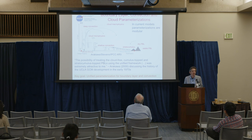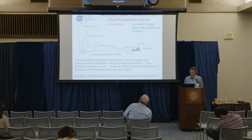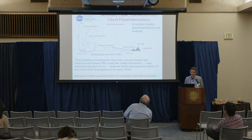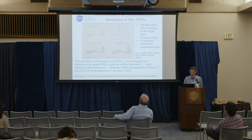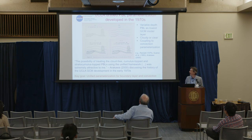Trying to come up with a unified parameterization is not just a very exciting theoretical challenge — it's also a very practical and engineering one. In the wonderful book that Dave Randall edited about 20 years ago on general circulation model development, Arakawa writes about the possibility of treating cloud-free, cumulus, and stratocumulus using a unified framework being extremely attractive to him. This quest of finding unified boundary layer and convection parameterization is something that actually starts on this very campus with Arakawa about 50 years ago.